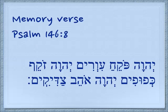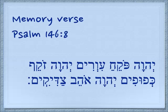Yehovah — you know. Pokeyach is a special word that means to open eyes; we don't usually use the regular word for opening, we use this word. Ivrim — this has a consonantal vav — it means people that are blind. Yehovah opens the eyes of the blind. Yehovah zokef — he raises up kifufim, the ones that are bowed down, the ones that are bent over. Yehovah ohev — loves — tzadikim, the righteous.